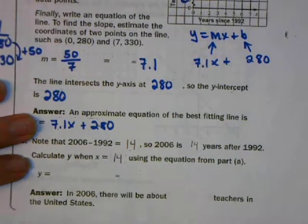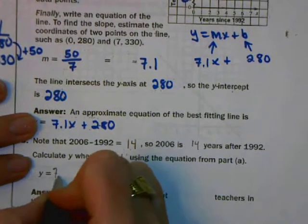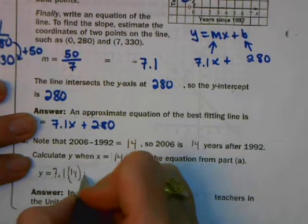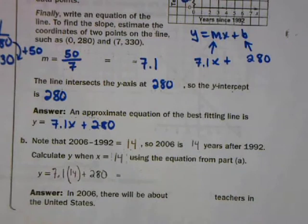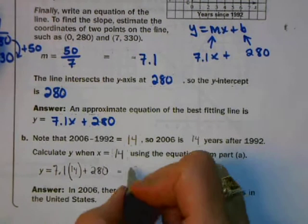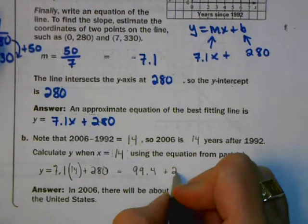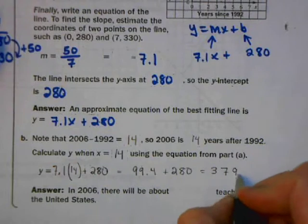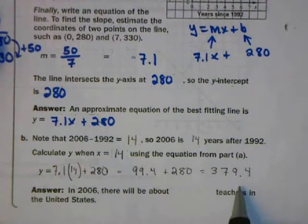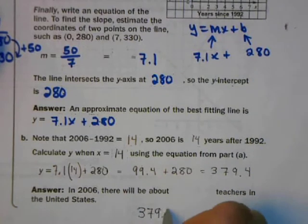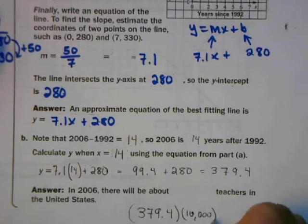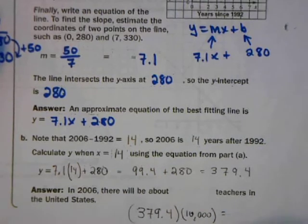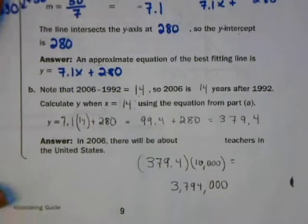I want to calculate y when x is 14, using the equation from above. Y equals 7.1 times 14, replacing x with 14, plus 280. 7.1 times 14 equals 99.4, plus 280 gives us 379.4. Remember that y is the number in ten-thousands, so I multiply 379.4 by 10,000, giving us approximately 3,794,000 teachers in the United States in 2006.